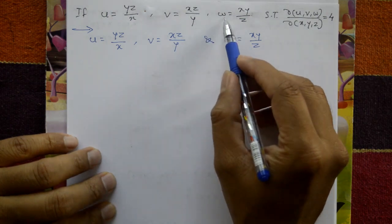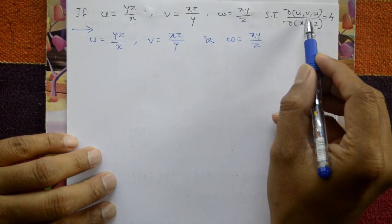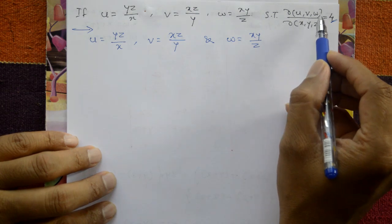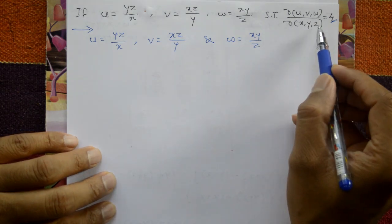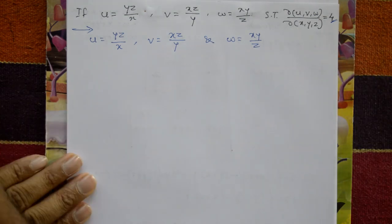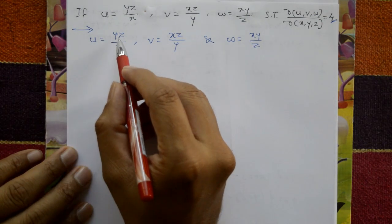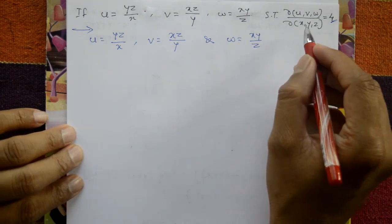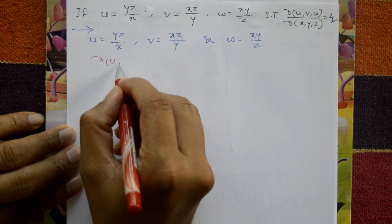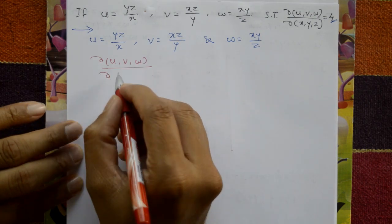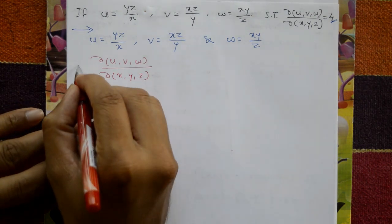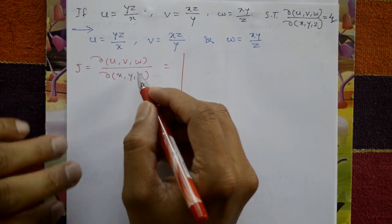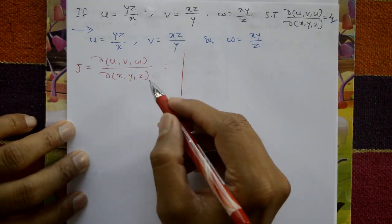If u = yz/x, v = xz/y, w = xy/z, show that ∂(u,v,w)/∂(x,y,z) = 4. Differentiation of u, v, w with respect to x, y, z partially. Given: u = yz/x, v = xz/y, w = xy/z. ∂(u,v,w)/∂(x,y,z) is the Jacobian J — take the determinant where u, v, w are functions of three independent variables x, y, z.